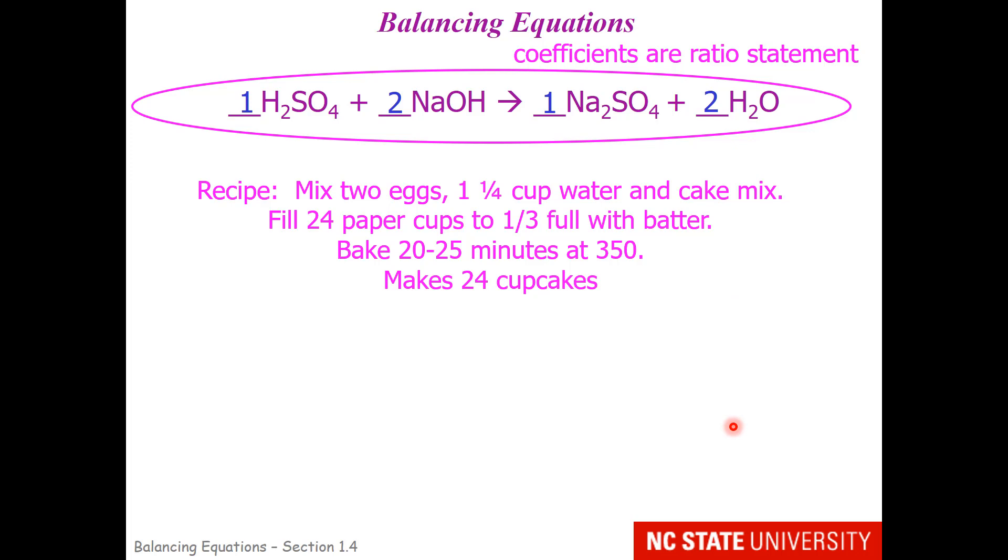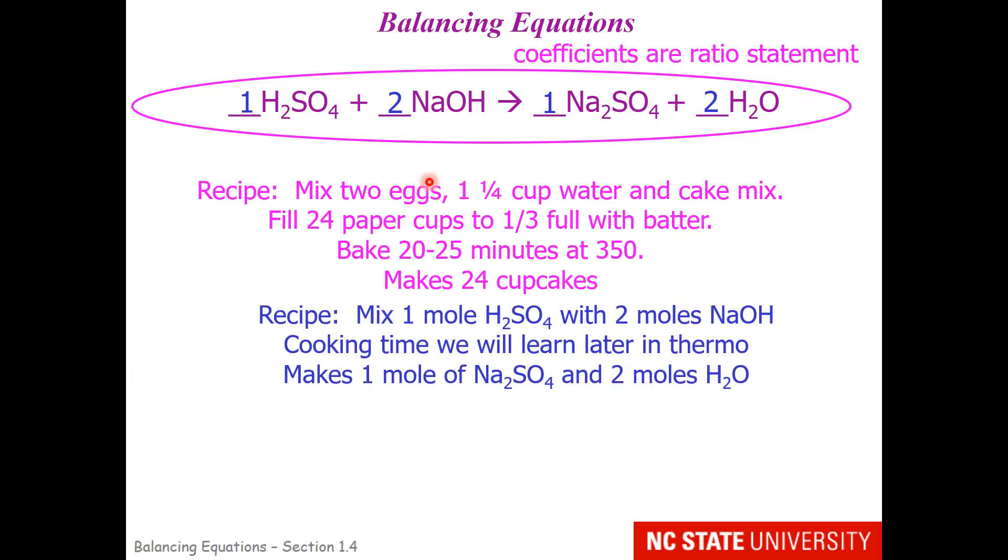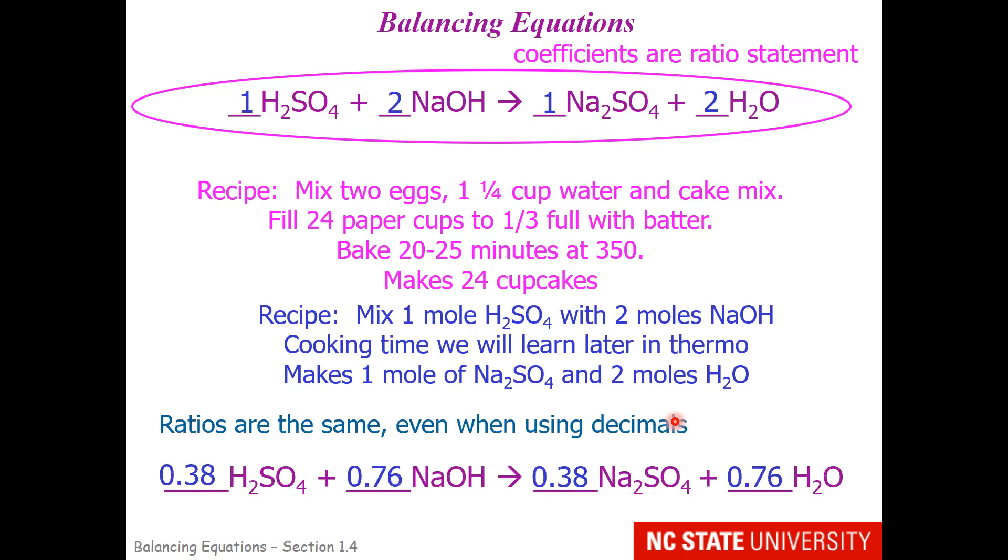So think of these as recipes. Now I do like to cook, but I'm not so much about baking. If I bake cupcakes, I'm going to use the recipe mix in the box. And it tells me to take two eggs, one and a quarter cup water, and the cake mix. If I wanted to make 48 cupcakes instead of 24, instead of two eggs, I would need four eggs. You know this. So if you double the recipe, then you double the ingredients. If you have the recipe, then you have the ingredients. So our recipe for making sodium sulfate is a set ratio. And if we want to change that, we still have to keep our ratio of 1 to 2 to 1 to 2, which this does even though we're starting out with decimals.